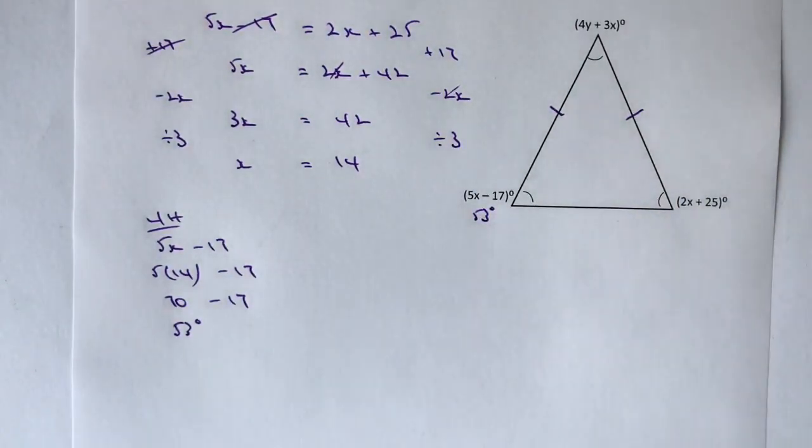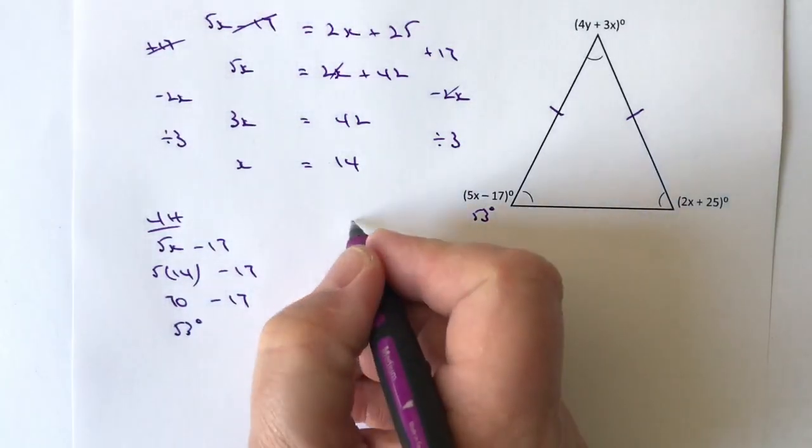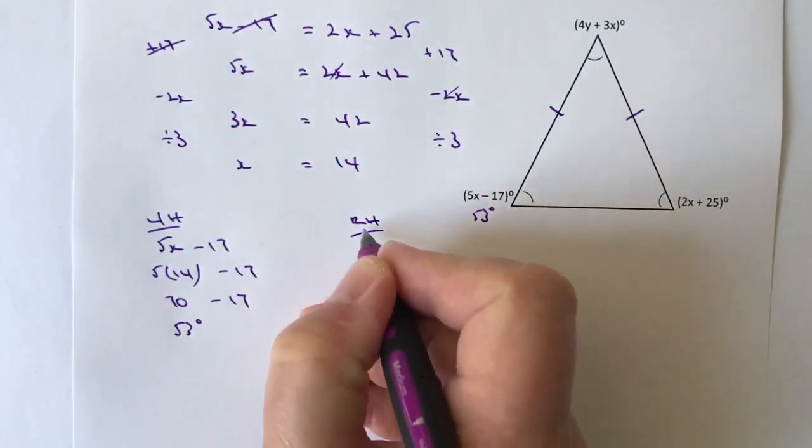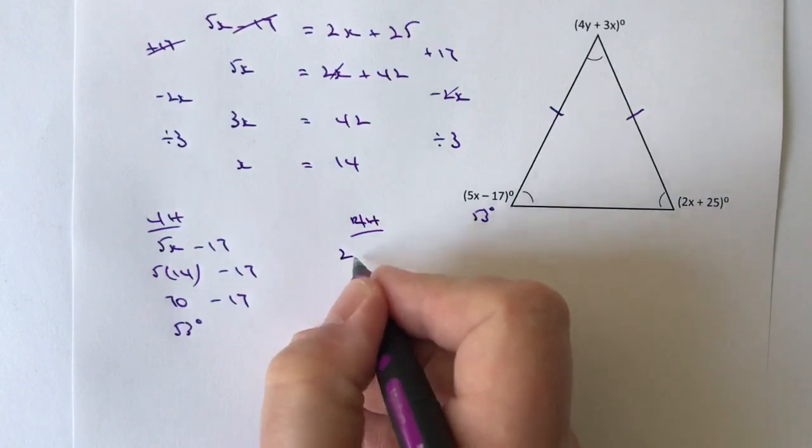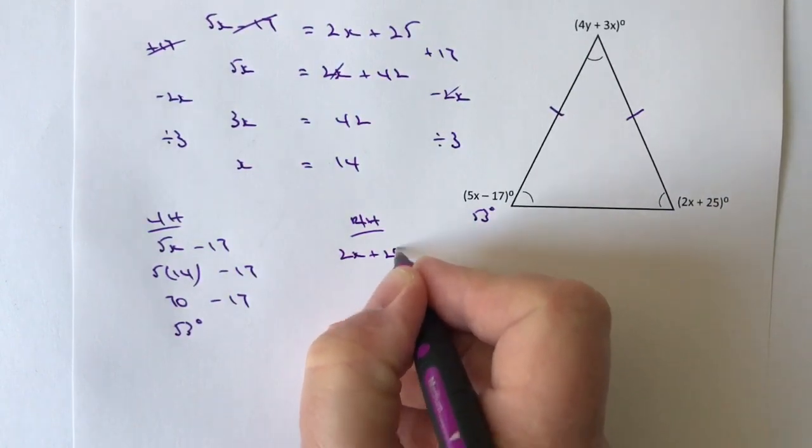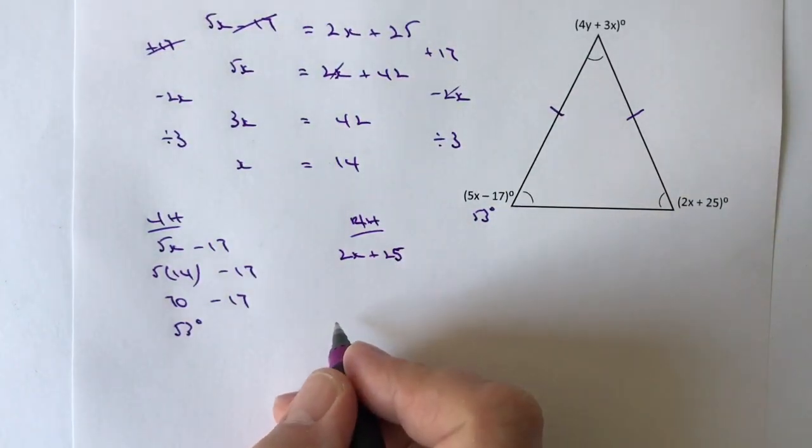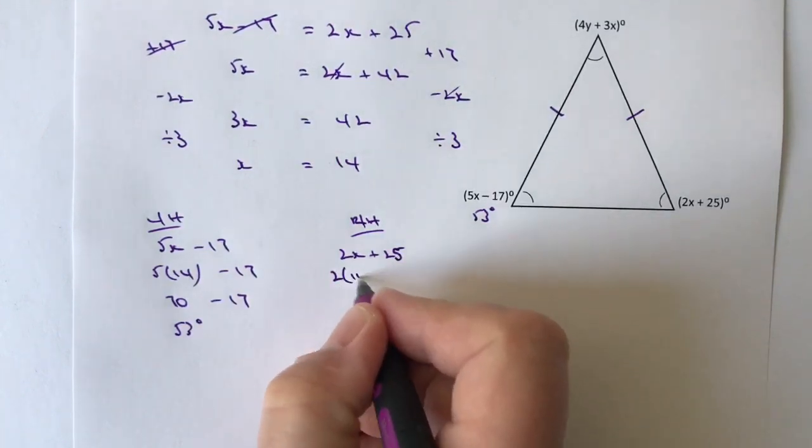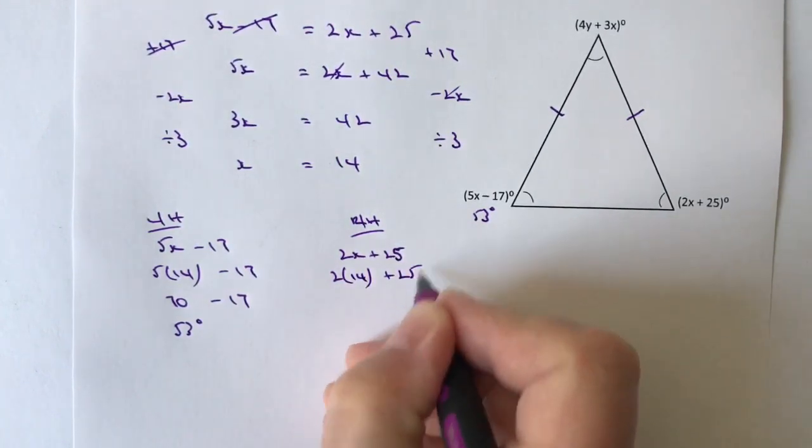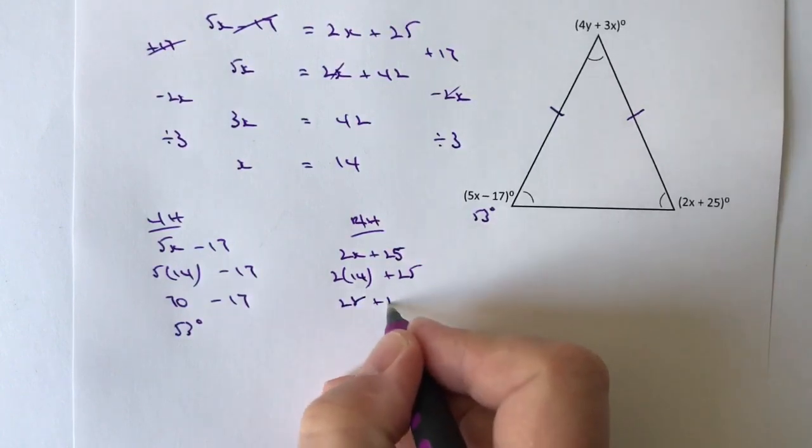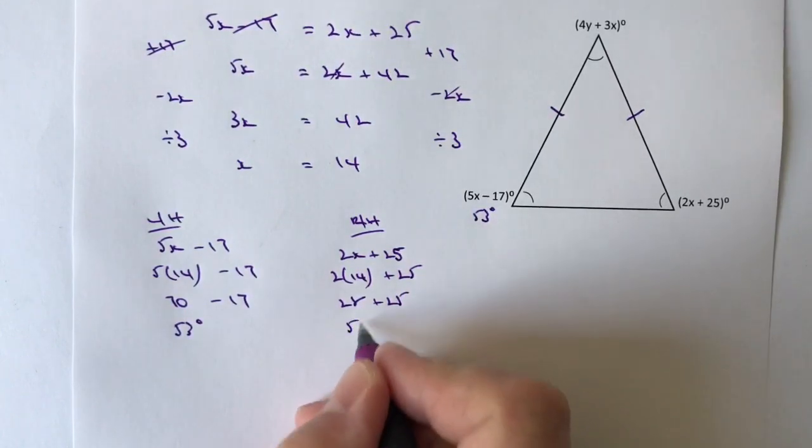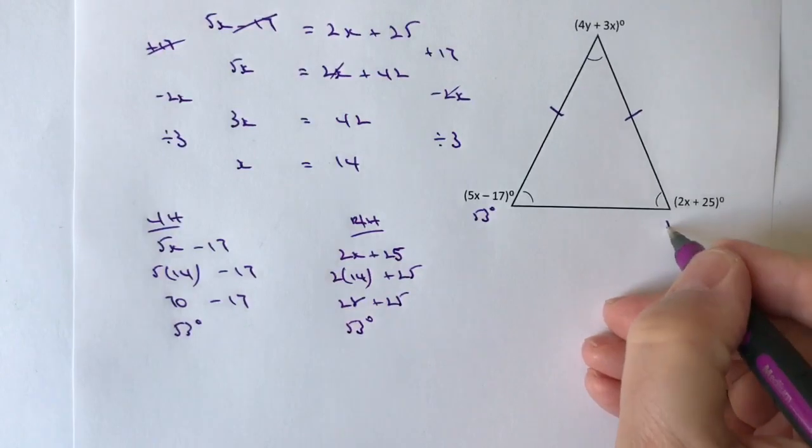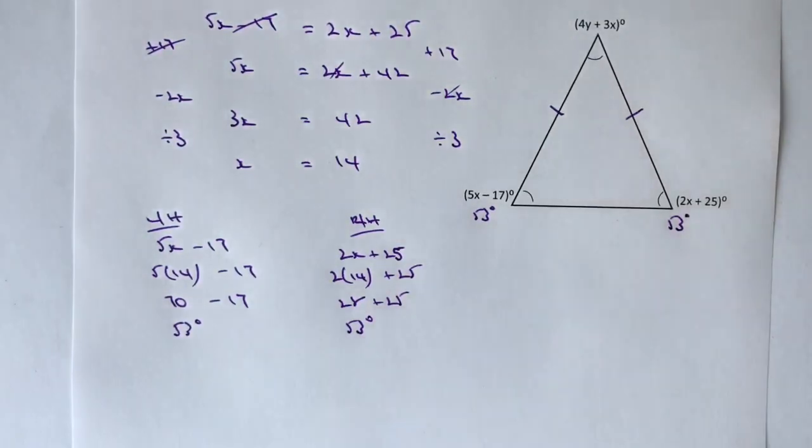Because it is isosceles, one would assume that the right hand side is the same, but I'm going to check just to make sure. So the right hand side is 2x plus 25, which is 2 times 14 plus 25. That's 28 plus 25, which is also 53 degrees. Now I know I'm definitely on the right track with my value of x.